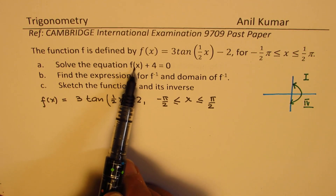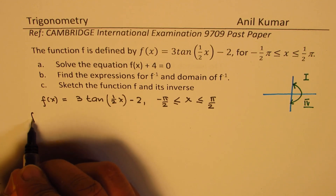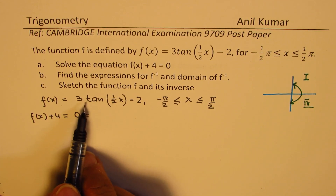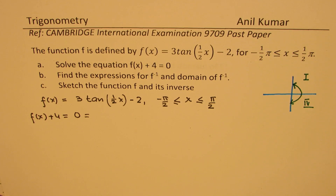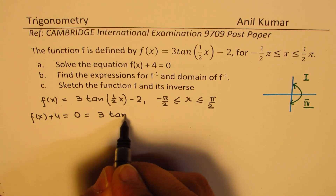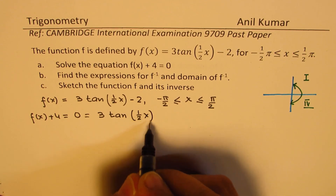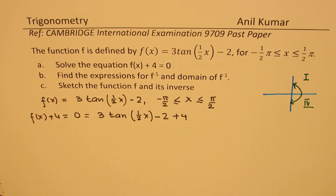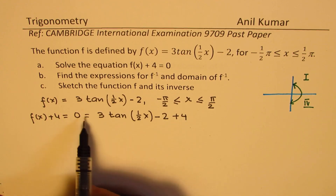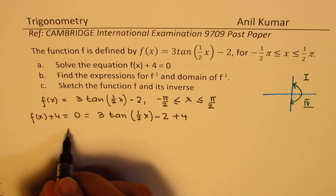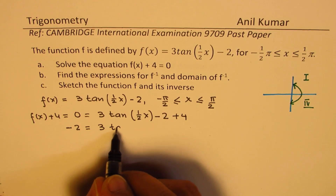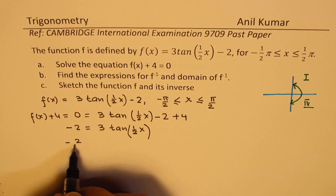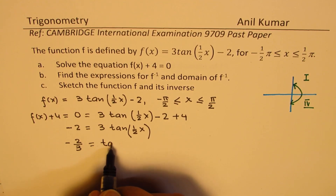The equation to be solved is f(x) + 4 = 0. We are given f(x) + 4 = 0, so we need to add 4 to f(x). That is 3 tan(x/2) - 2, and if we add 4 to this we should be getting 0. Taking numbers to this side, we get minus 2 equals 3 tan(x/2), or minus 2 over 3 equals tan(x/2).